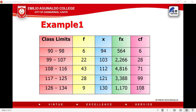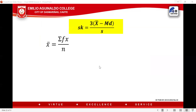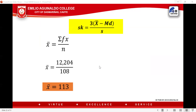Now we determine the median. Based on the class limits, from 108 to 116 is our median class — highlight it. The mean formula is: mean = summation of FX divided by N, where our summation of FX is 12,204 divided by 108, which equals 113. So the mean is 113.